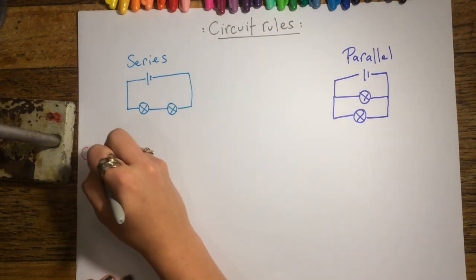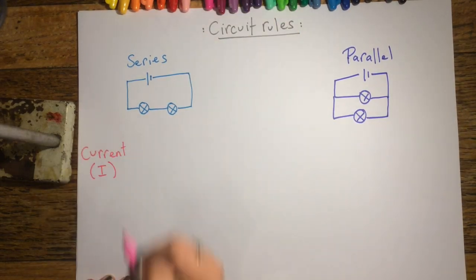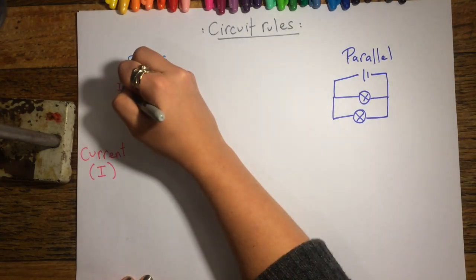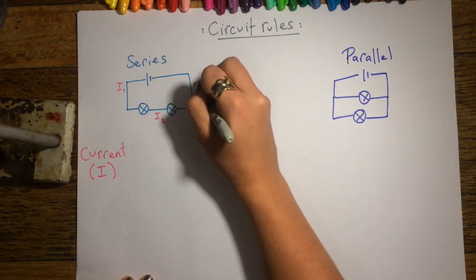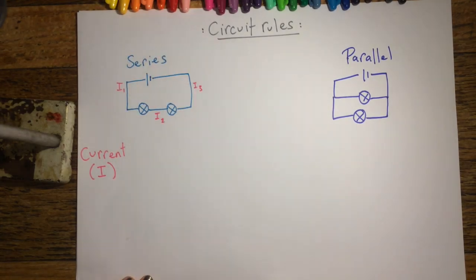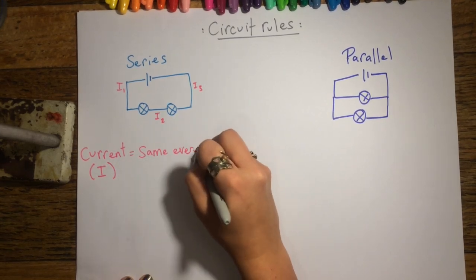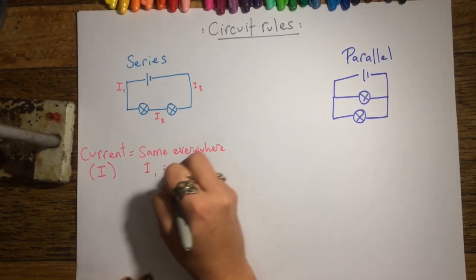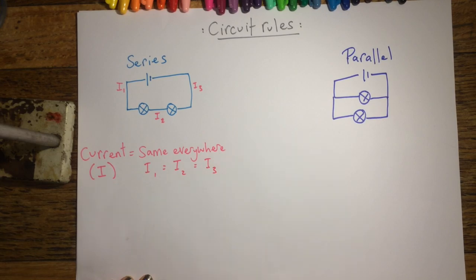When we're talking about current, we need to think about the flow of charges around the circuit. In a series circuit, there's just one pathway that those charges are going to take. Therefore, the current is going to be the same everywhere — the current at I1 will equal the current at I2, which will equal the current at I3.